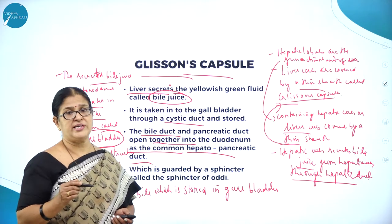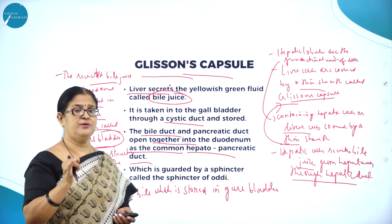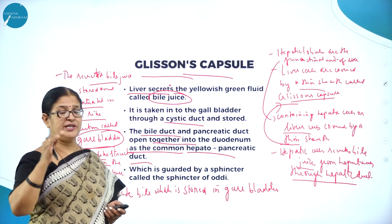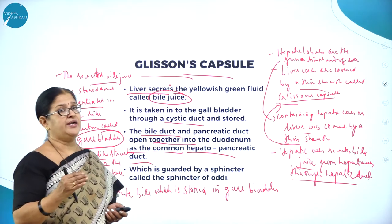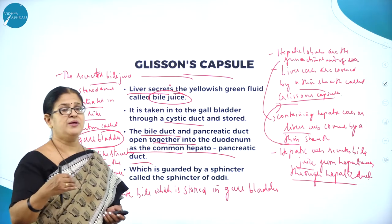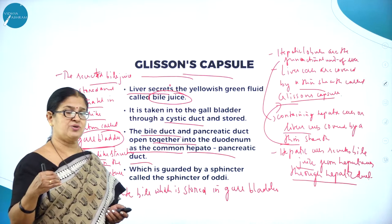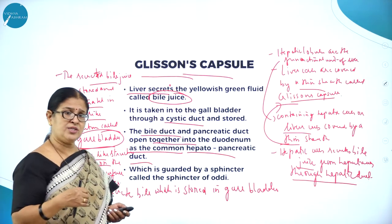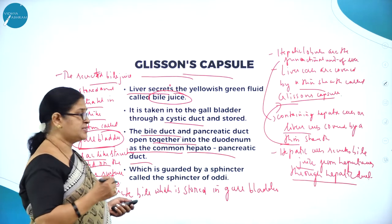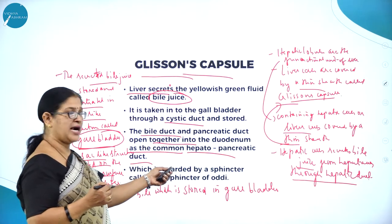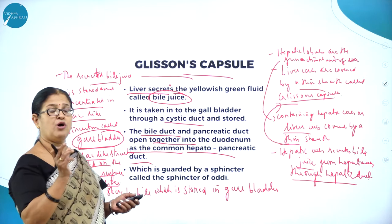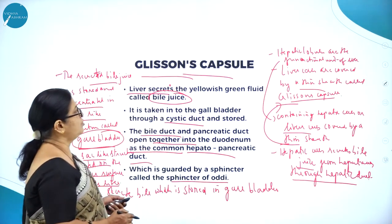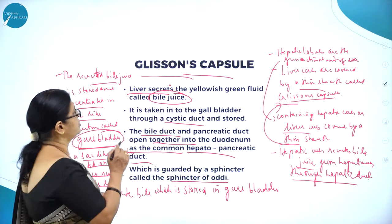As we know, the small intestine is divided into three parts: duodenum, jejunum, and ileum. The first part, which continues from the pyloric stomach, is the duodenum. Next comes the jejunum, and the last part is the ileum. This area is guarded by a sphincter called the sphincter of Oddi.